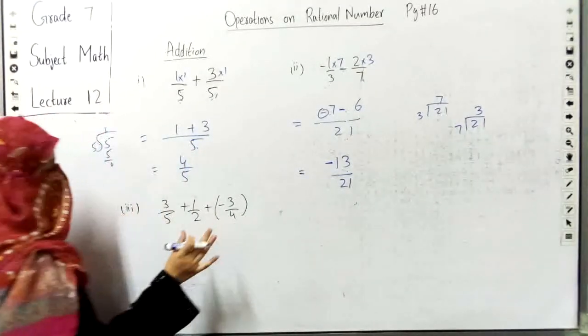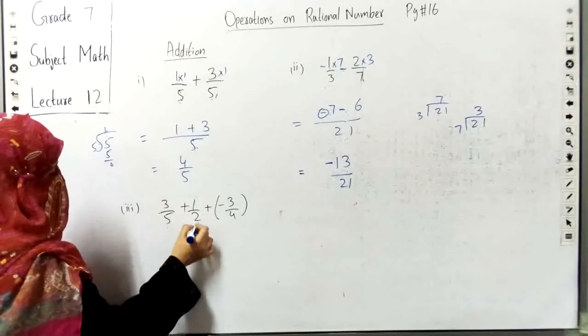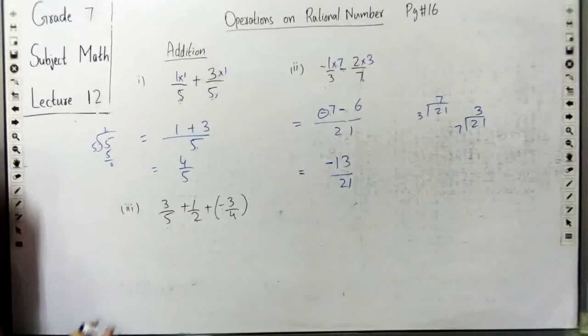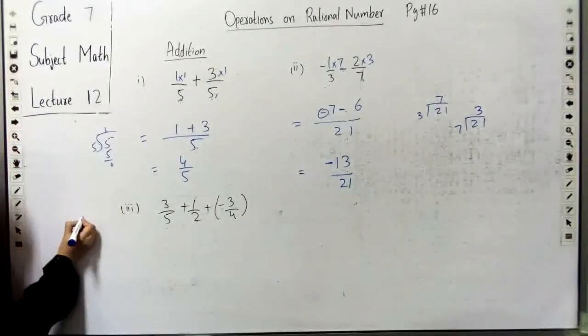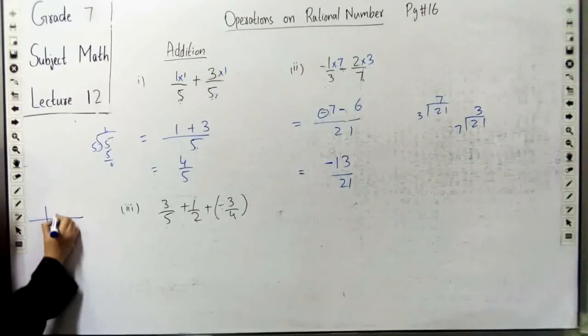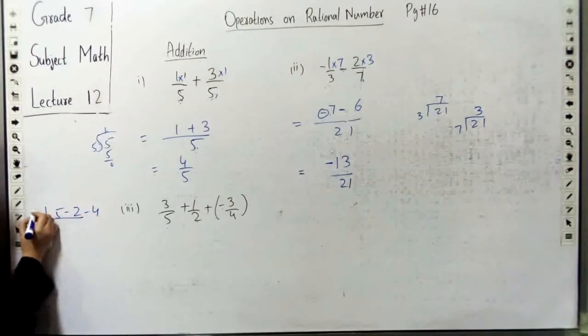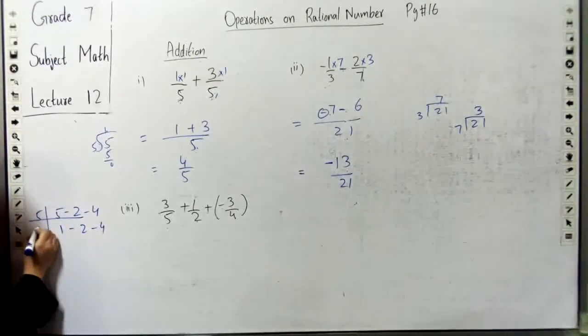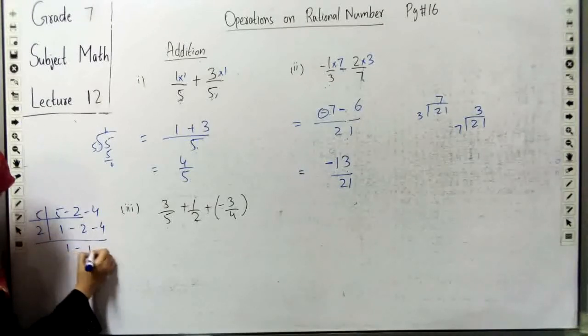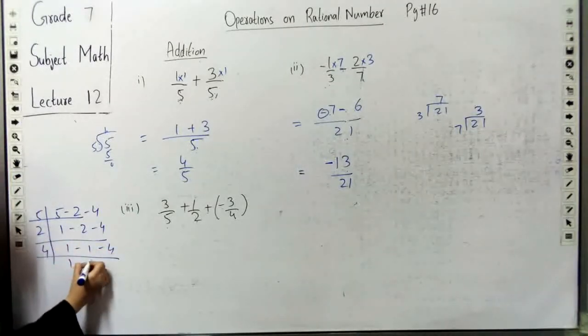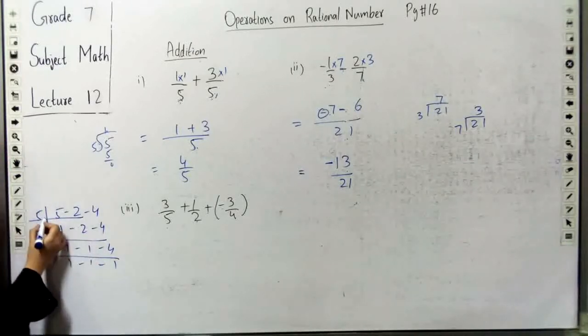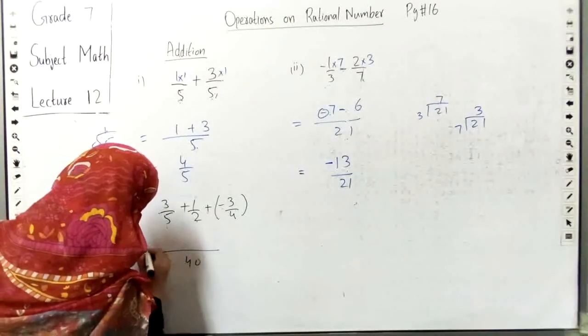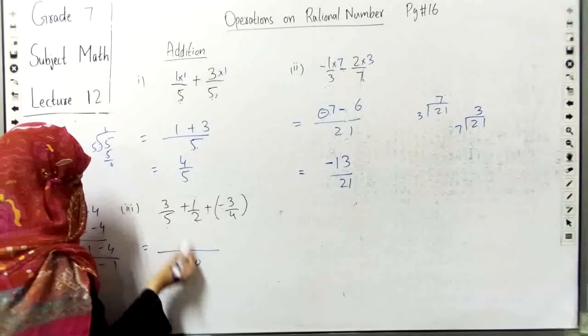Next we have 3 numbers we have to add: 3 by 5 plus 1 by 2 plus minus 3 by 4. So we will add 5, 2 and 4.